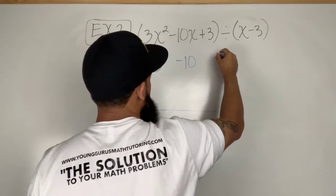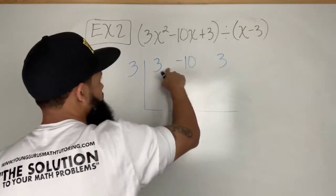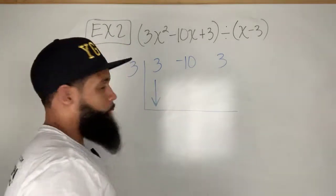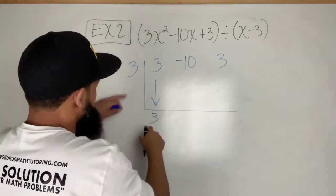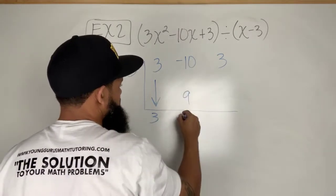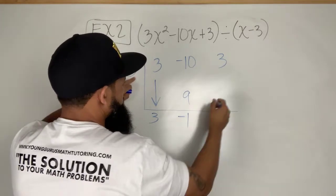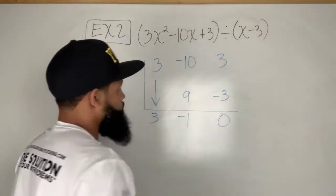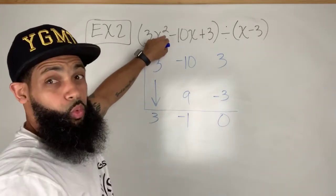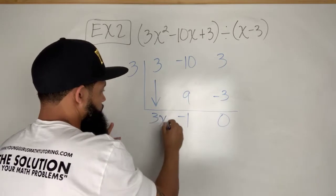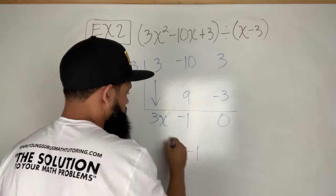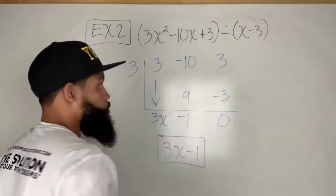I'm going to take the coefficient, so I start with three, I start with negative 10 next, and then I have three. So this is the coefficient of x squared, this is the coefficient of x, this is the constant. I bring down that first number, that's going to be 3. 3 times 3 is 9, I put it over here. Add these, I have negative 1. 3 times negative 1 is negative 3, and these give me 0.